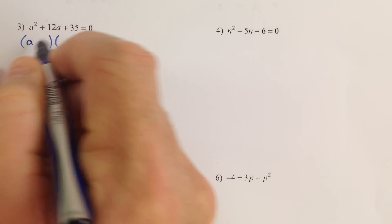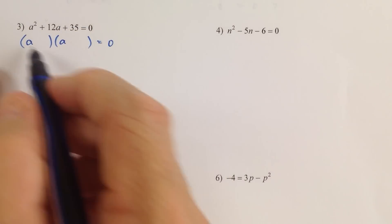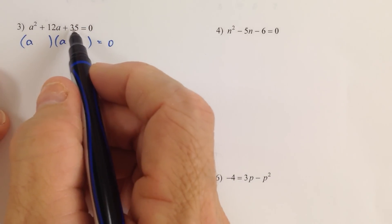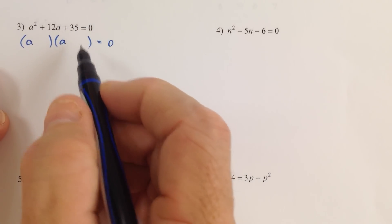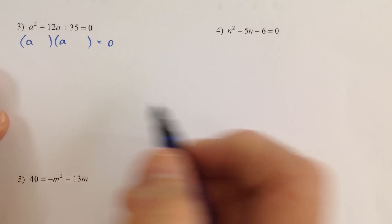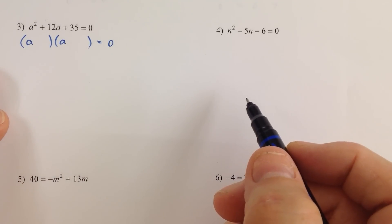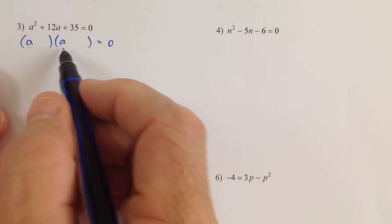We're going to factor this trinomial by understanding that when we first try a GCF, that doesn't work, it's not a difference of squares. The next one we go to is it's a trinomial, so we know that if it does factor, it will factor with one binomial times another.